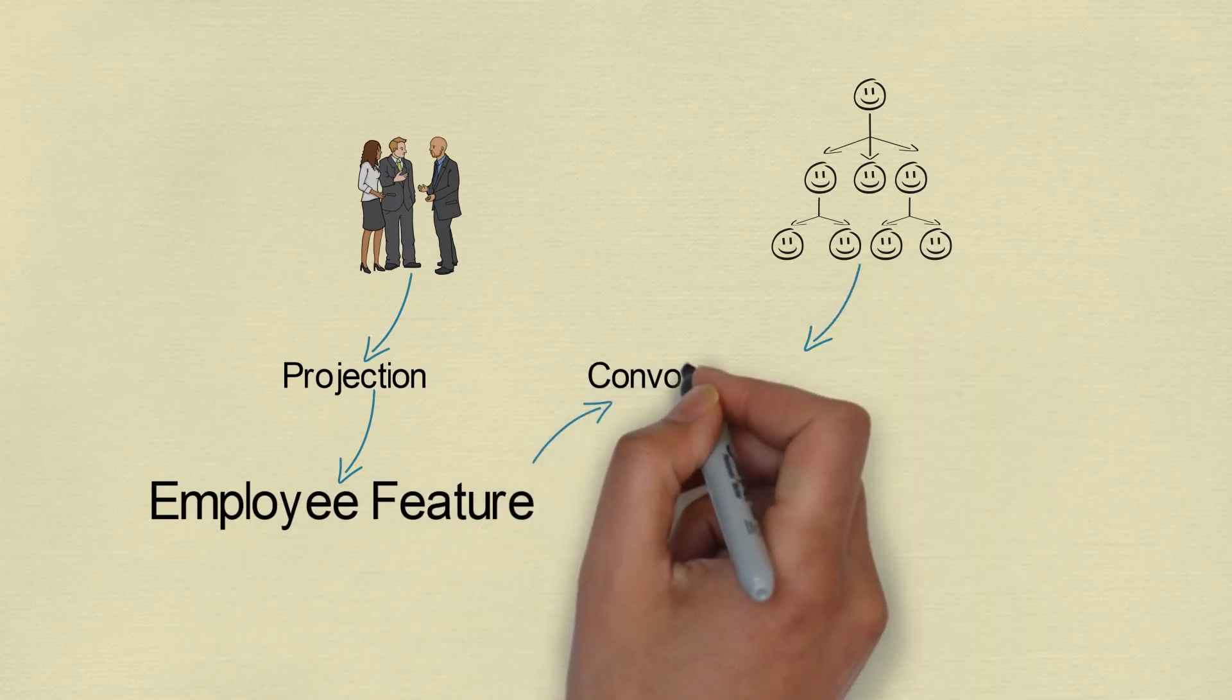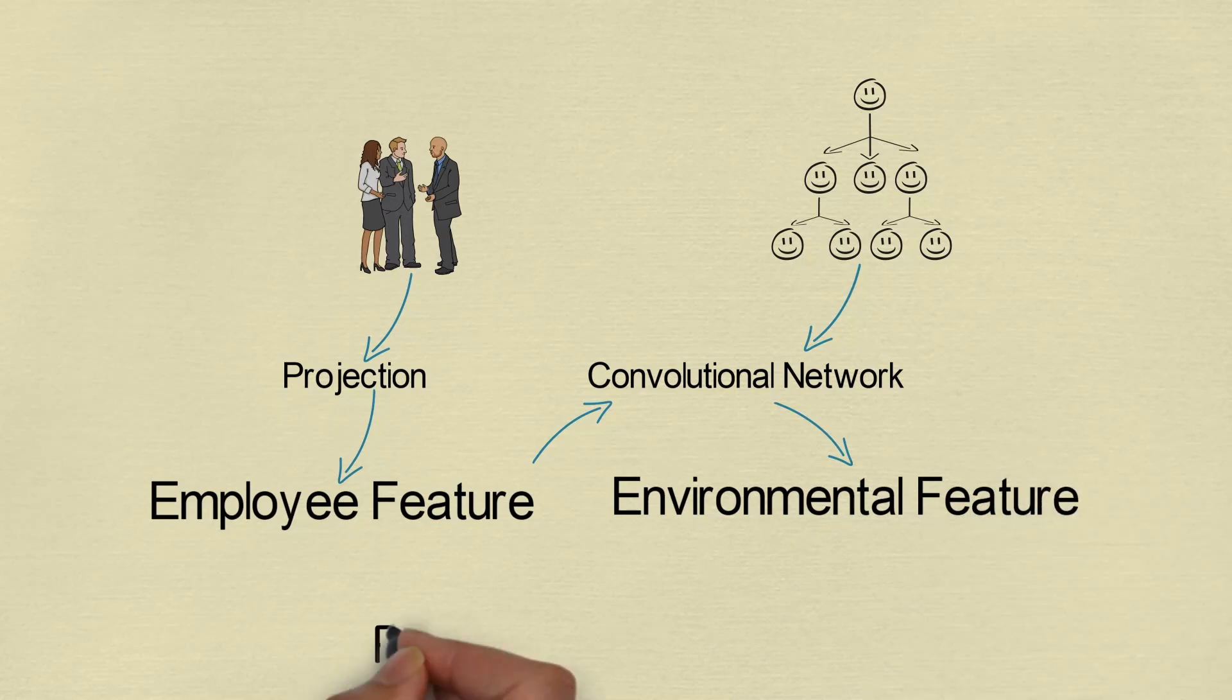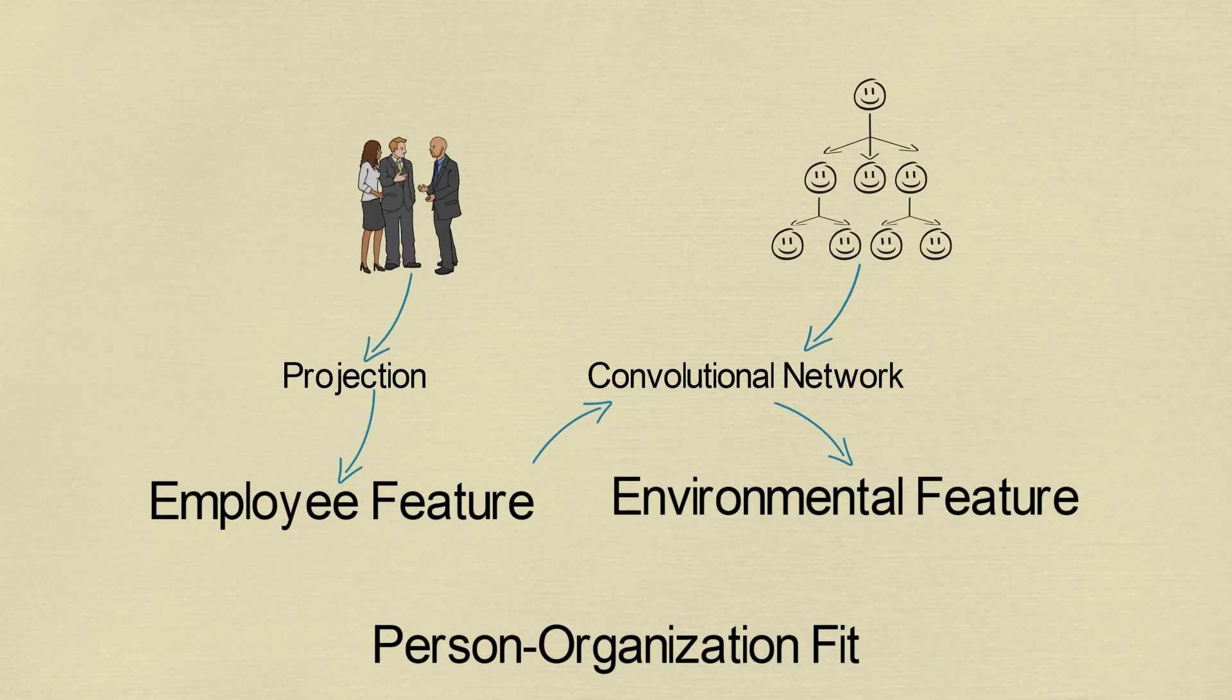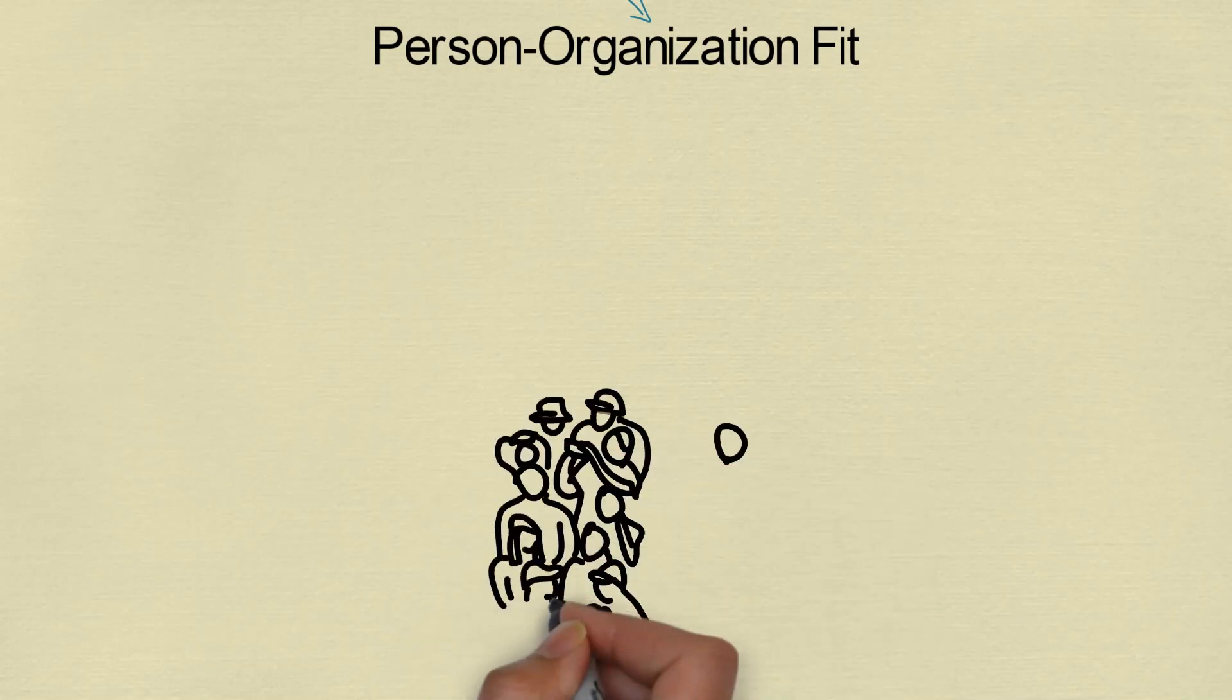Then we apply organizational structure-aware convolutional operation on these employees to extract their environmental features. After that, they form a person-organization fit representation vector. We combine personal feature and environmental feature with multilayer perceptron as it contains information about how the employee fits with their organization.